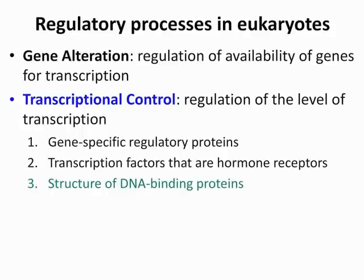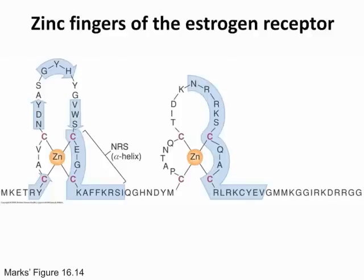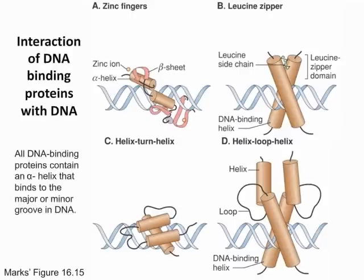Number three under transcriptional control is the structure of DNA-binding proteins. There are four examples of DNA-binding proteins: zinc fingers, leucine zippers, helix-turn-helix, and helix-loop-helix. Know that all four are examples of DNA-binding proteins, and that they all contain an alpha helix that binds to the major or minor groove in DNA.